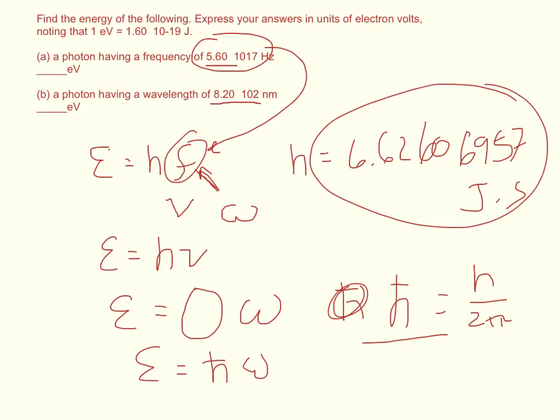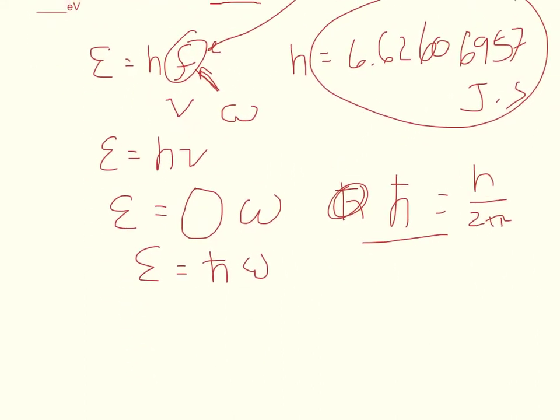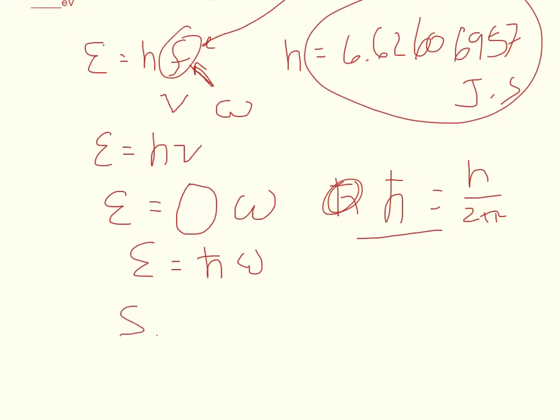Now back to the actual problem at hand, when I plug in my numbers, just like you see here, the answer I get is: 5.6 times 10 to the 17th hertz times Planck's constant, so times 6.62 times 10 to the negative 34th, and the energy is equal to 2319.12, and this is electron volts.